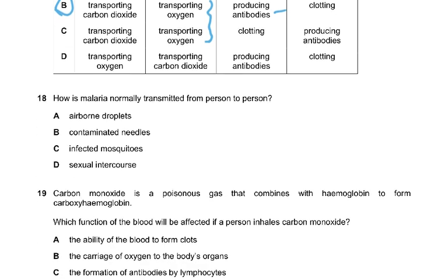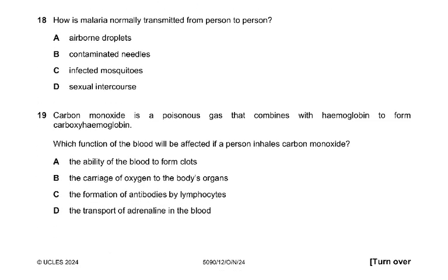Question 18: how is malaria transmitted from one person to another? The answer is C — infected mosquitoes. Malaria is transmitted via infected mosquitoes acting as vectors.